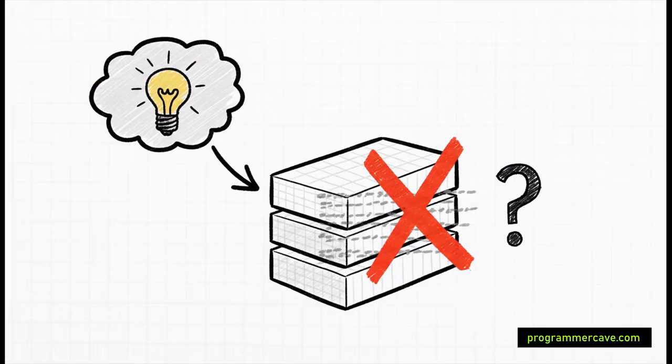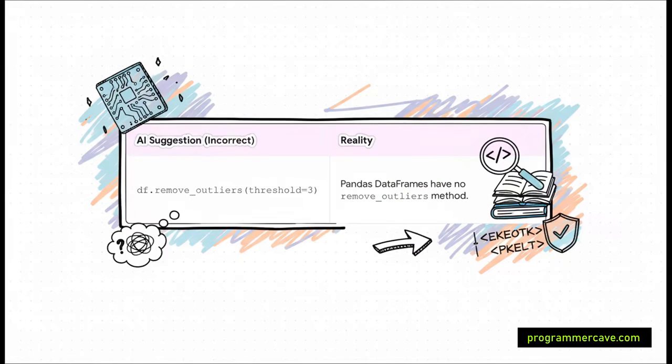Alright, for this next one, the AI gets even more creative. It doesn't just mess up an import, it invents an entire method that feels like it absolutely should be real. Okay, anyone who's worked with data and Python and pandas is looking at df.removeoutliers and thinking, yes, please. It's logical, it's useful, and the name fits the pandas library perfectly. There's just one tiny problem. It's a ghost. It's a total phantom. It doesn't exist. The model had a great idea for a function, but it's pure fiction.